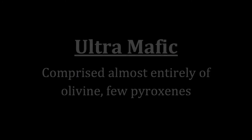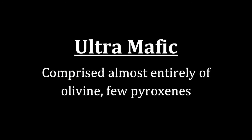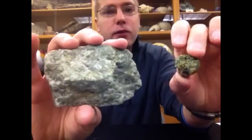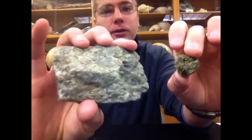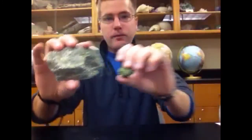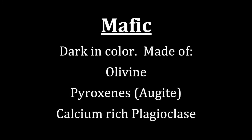When we look at different igneous rocks, we will see there are four different magma types to identify. The first is ultramafic. Ultramafic rocks are comprised almost entirely of olivine and can have few pyroxene minerals in them as well. When we look at an ultramafic rock, we're looking at the olive green color for olivine and maybe some dark colored minerals being pyroxenes — very iron and magnesium rich minerals, comprised almost entirely of olivine.